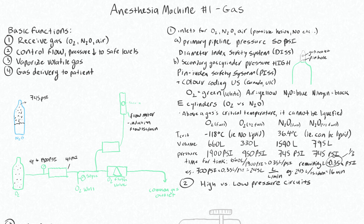After the flow meter, the gas will run through a vaporizer, picking up volatile anesthetic, and then run down to our common gas outlet. This is a much more elegant route because we're controlling the flow of gas and it's also picking up a volatile anesthetic that is being delivered to the patient, rather than just blasting the patient with oxygen through the O2 flush valve.